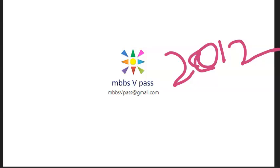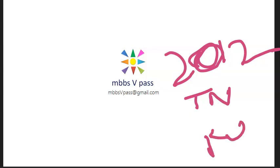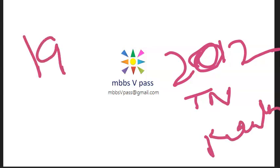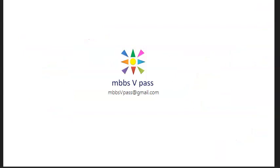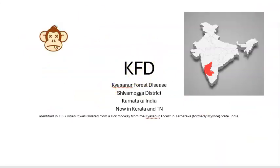By 2012, this disease was found in surrounding states like Tamil Nadu and Kerala as well. Initially, in 1957, the virus was found in a dead monkey — that is where the Kyasanur Forest Disease Virus (KFDV) was first isolated. KFD originated in Shimoga district, Karnataka, India.